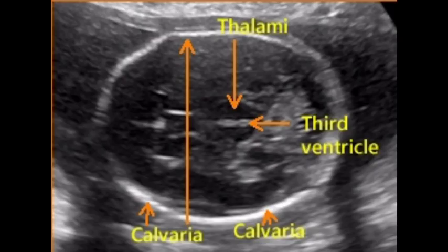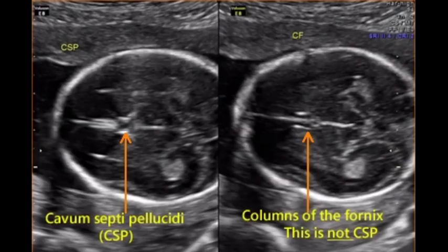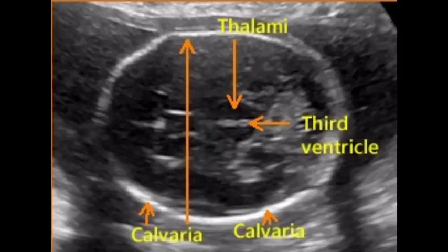That is, at each examination, biparietal diameter images were acquired in the transthalamic plane, where the landmarks consist of the cavum septum pellucidum, thalami, and absence of the cerebellum.